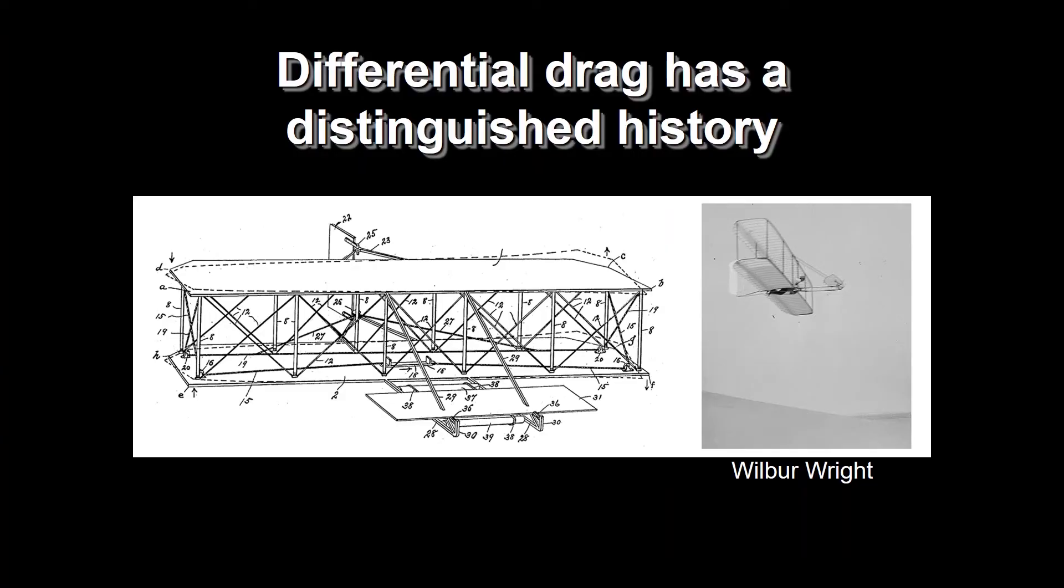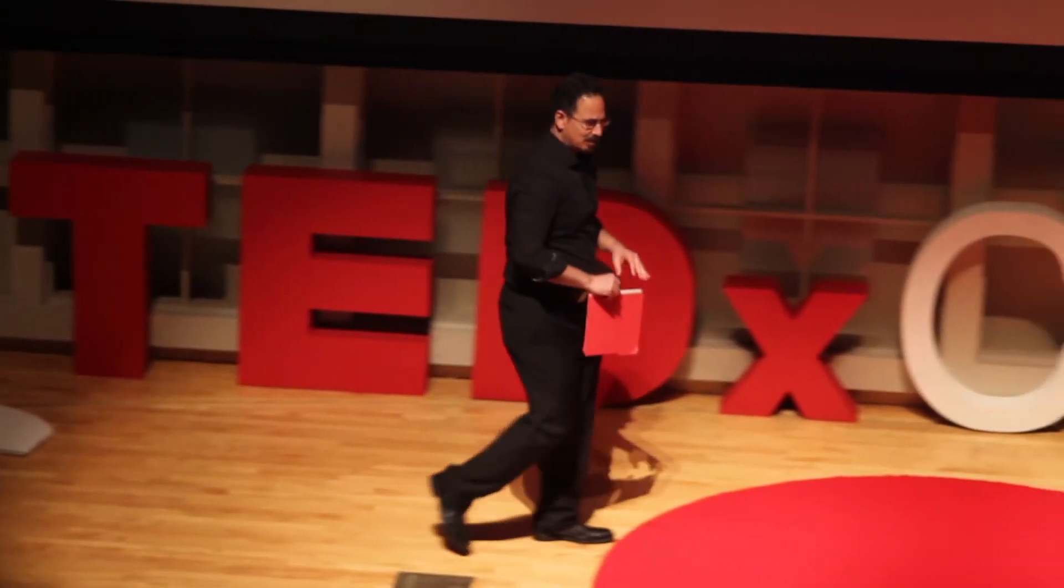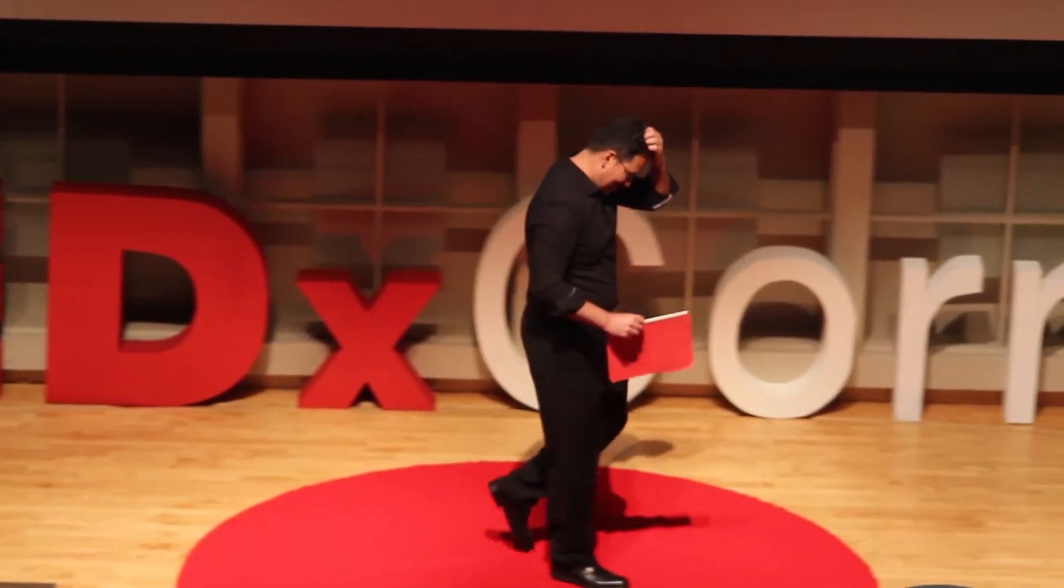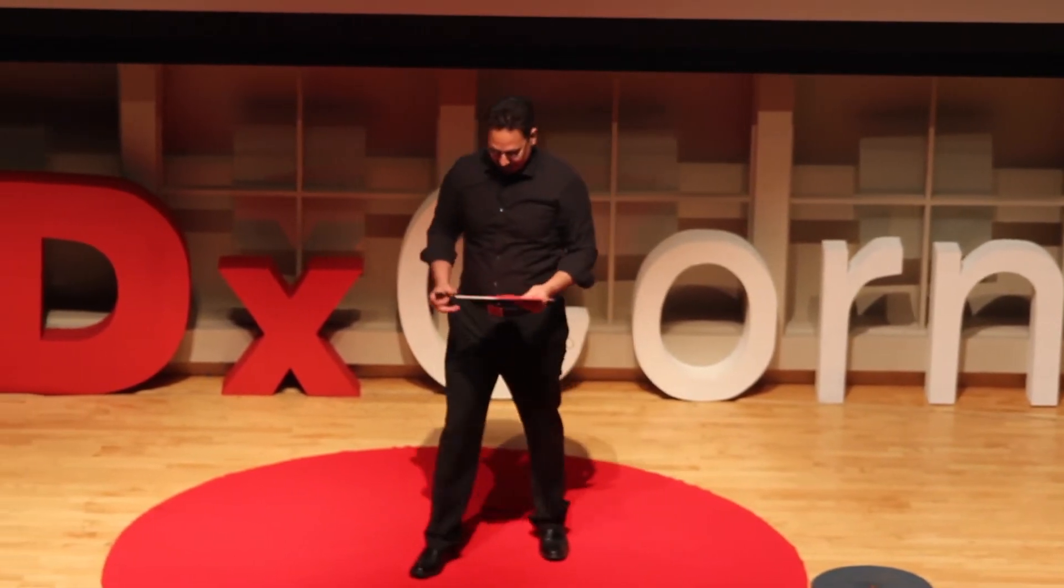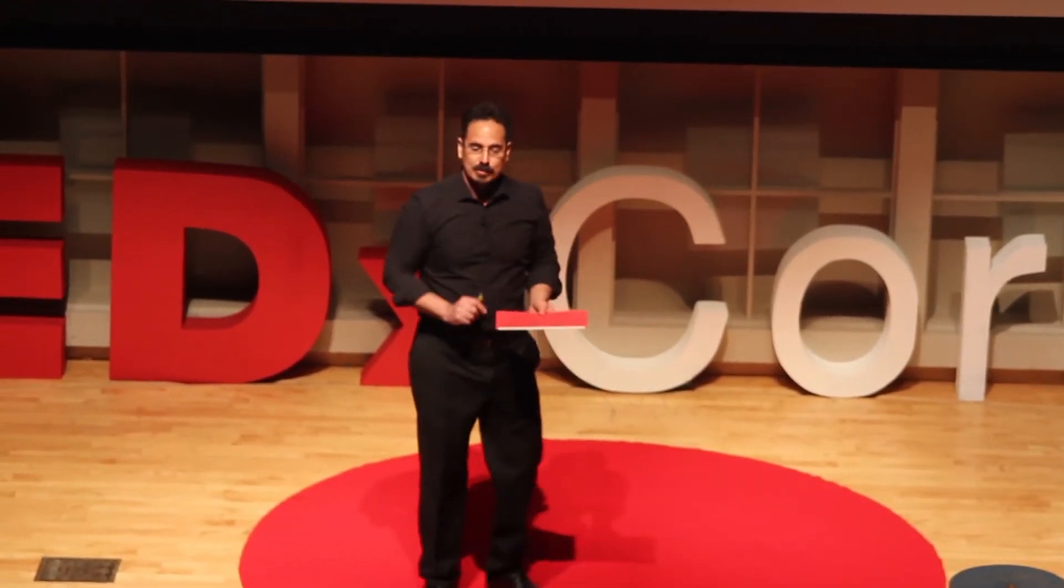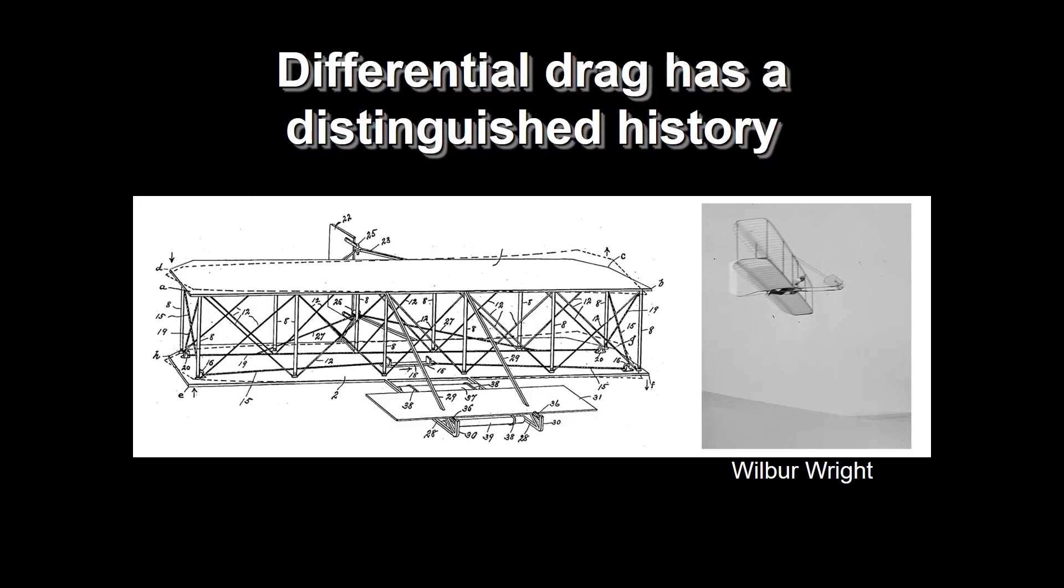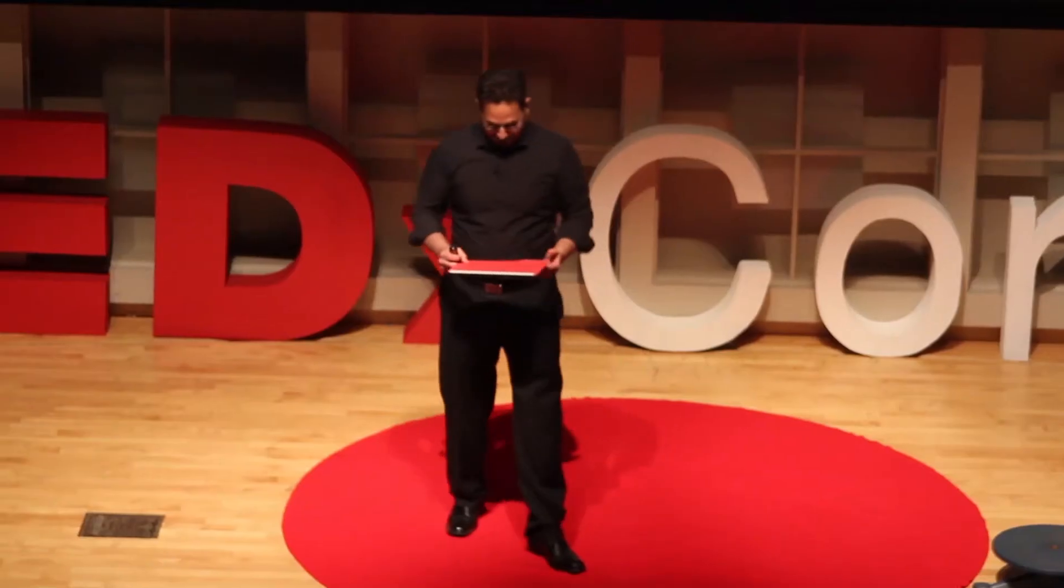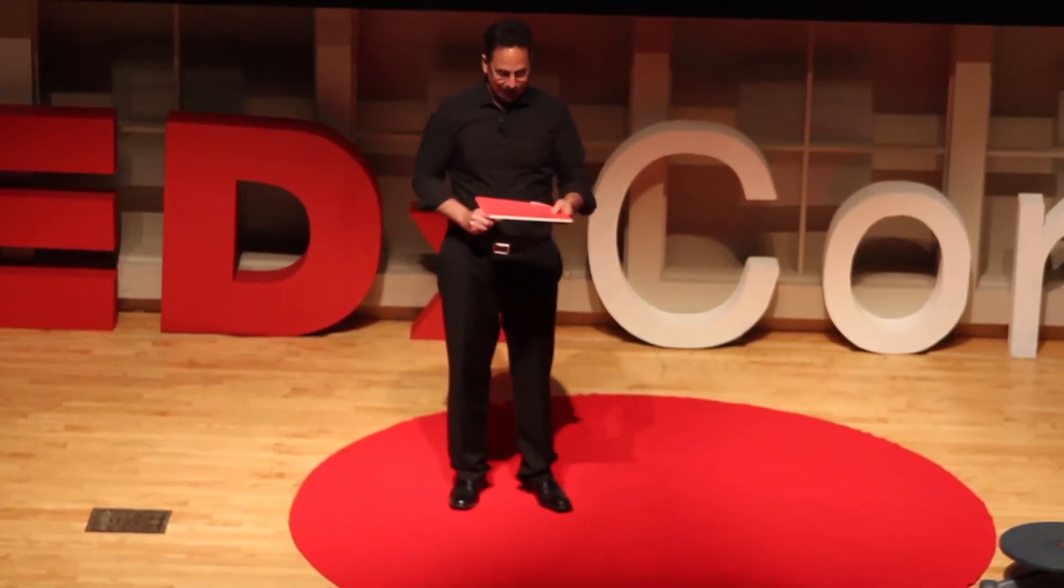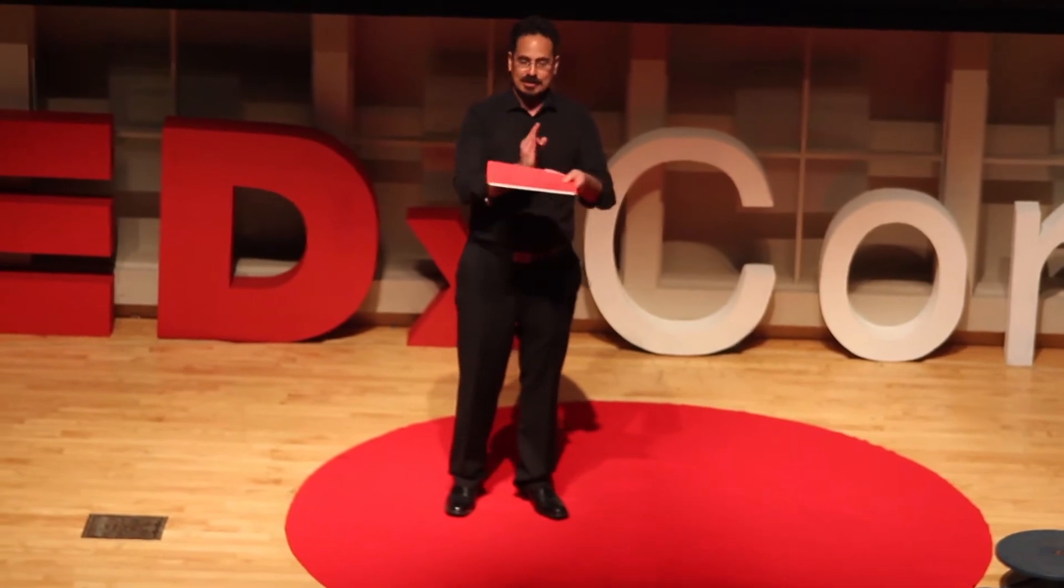Now, this idea of differential drag has a long and distinguished history. The Wright brothers dealt with this problem. Everybody knows that the Wright brothers did not invent the first airplane. There were many people flying before the Wright brothers. No, what the Wright brothers did was they invented the first controllable airplane. What was the problem? Well, airplanes are not like cars. You can't just use the rudder to steer them. Airplanes are subject to roll instabilities.